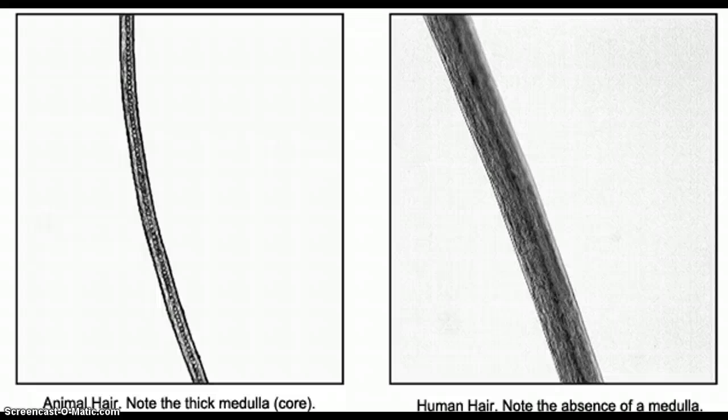So that's one of the main differences between them. In the animal, the medulla will cover most of the length. It's very constant. It's rarely fragmented. Whereas in human hair, if the medulla is even there, it will be extremely fragmented and inconsistent. Also, animal hair will have extremely thick medullas, which can be seen. Whereas in human hair, there usually won't be any.